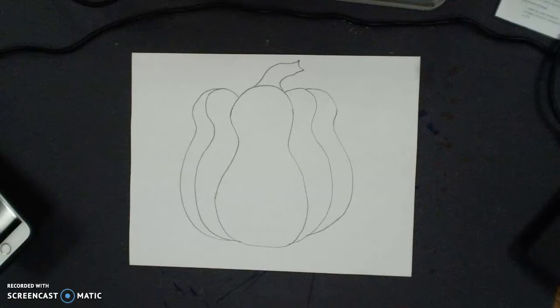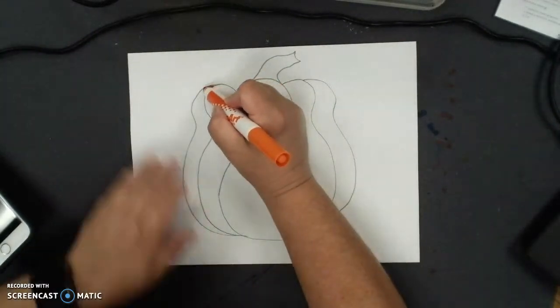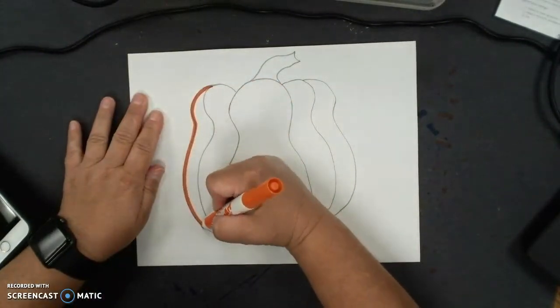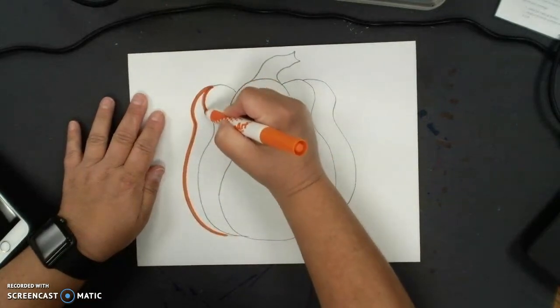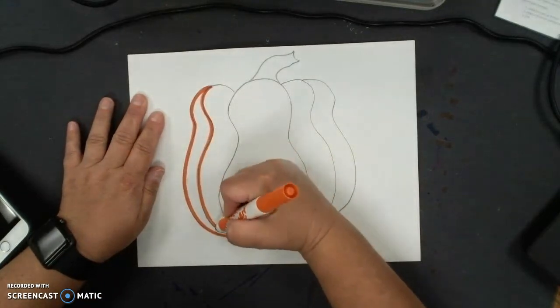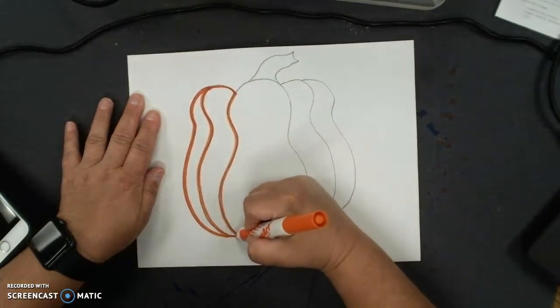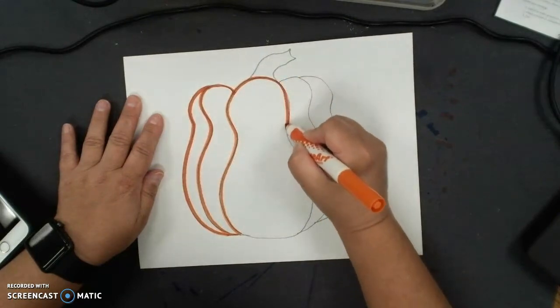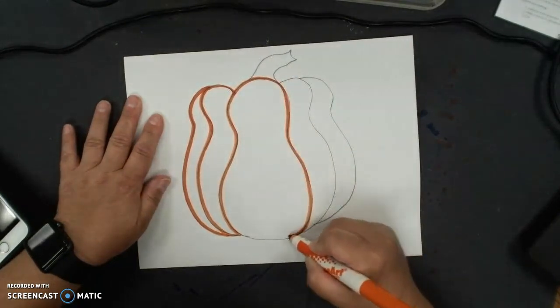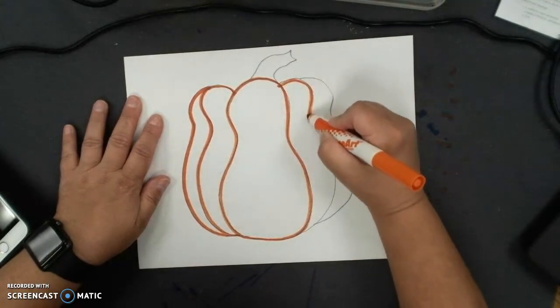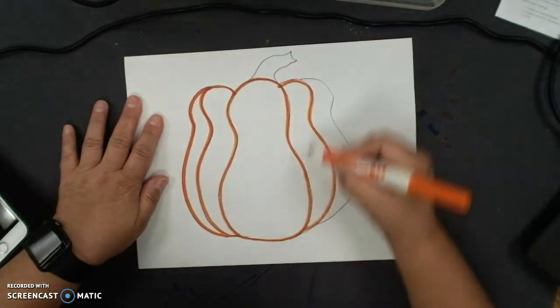Now the next thing I'm going to do is get a coloring tool. I'm going to use a marker. If you have an orange marker that would be great, if it's not orange that's okay too. We're going to start by coloring in our pumpkin with the orange marker. I like to trace over my lines and make them nice and smooth.